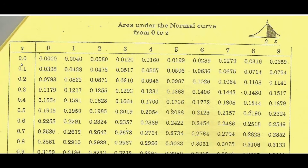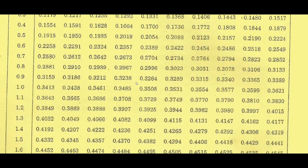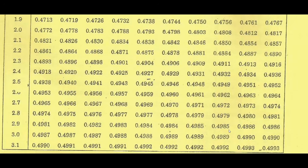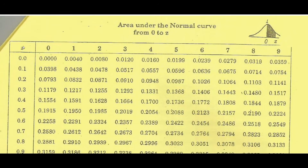The table values start from 0.0 and end at 3. Suppose you want to find the area for z equal to 0.15: 0.1 is in the first column and the second decimal, 5, is in the first row. The answer is 0.0596. This is how you find the table value, and the table is given in your examinations for you to use.